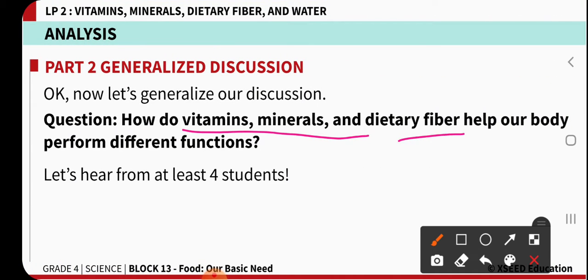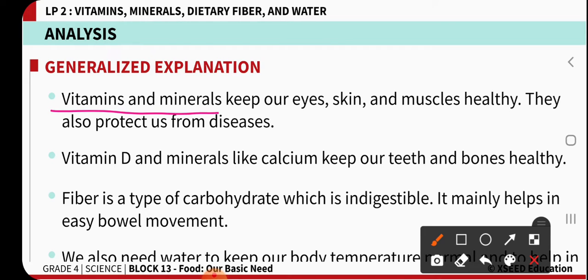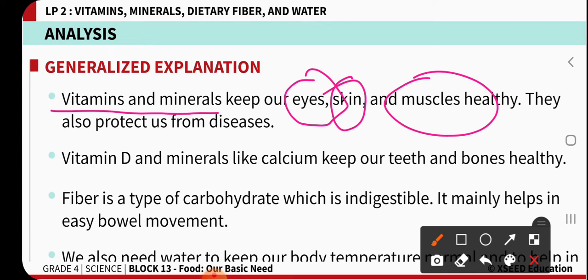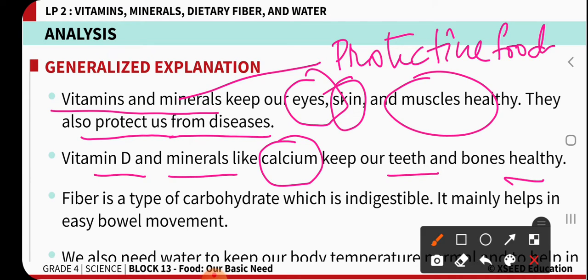Now how are vitamins, minerals, and fibers helpful to our body? Vitamins and minerals are very much helpful for our eyes, skin, and muscular growth and development. They always help us fight and protect from diseases — that is why we call them protective foods. Vitamins like D and minerals richly contain calcium, which is helpful in teeth and bones development. Fiber-rich food, even though it is a type of carbohydrate, is totally indigestible in nature, and it helps in bowel movement so that feces can be removed easily from our body.